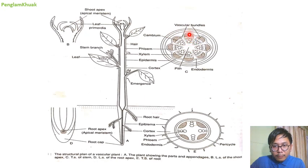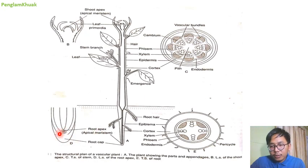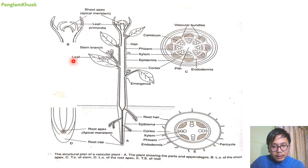A vascular bundle includes xylem, cambium and phloem — xylem, cambium and phloem together form one vascular bundle. In the root, xylem and phloem are arranged in different radii, and here we have the root cap. Root apical meristematic cells are those cells which keep on dividing; they keep on dividing and produce new tissue or new cells — they are called meristematic cells or tissue.